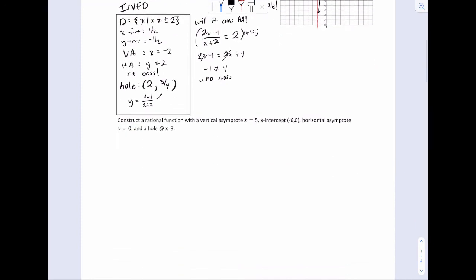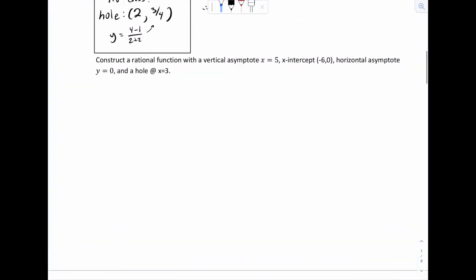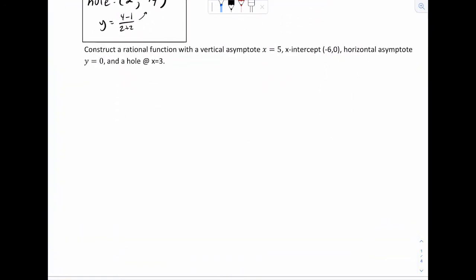We'll do one more example. This example says to construct a rational function with a VA x equals 5, x intercept negative 6, horizontal y equals 0, and a hole at x equals 3. So first thing you want to do is define the function. Don't forget to put y equals. We'll definitely need a fraction.